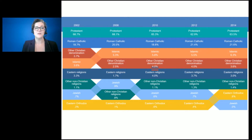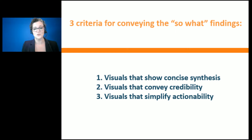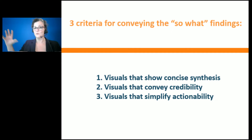If we're going to use data visualization to convey so-what results, we have to have some criteria for what makes it effective — something that would be executive summary worthy, for example. I think there are really three criteria. If I'm going to use a data visualization for a so-what story, I want to make sure that it conveys some concise synthesis — taking what might be a complex story and making it super concise and well synthesized.